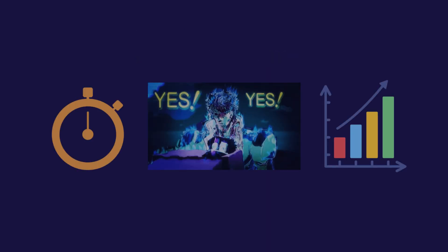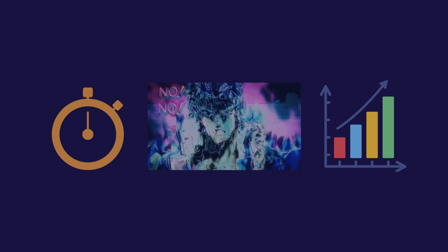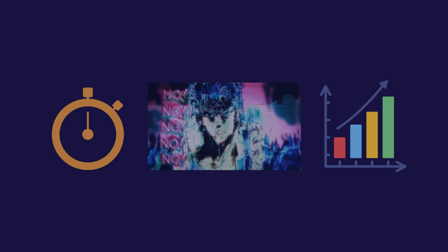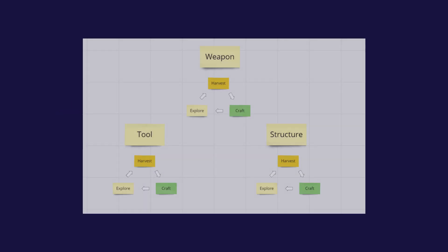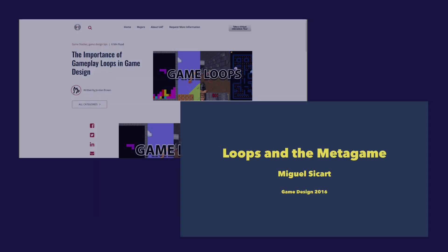While this core loop does describe the moment-to-moment gameplay progression, it does so whilst also ignoring the additional systems and nuances that most games offer. This is where the secondary and tertiary loops come into play, specified by both Jordan Brown of UAT and Miguel Sicard to describe the minute-to-minute and longer-term progression and objectives respectively.